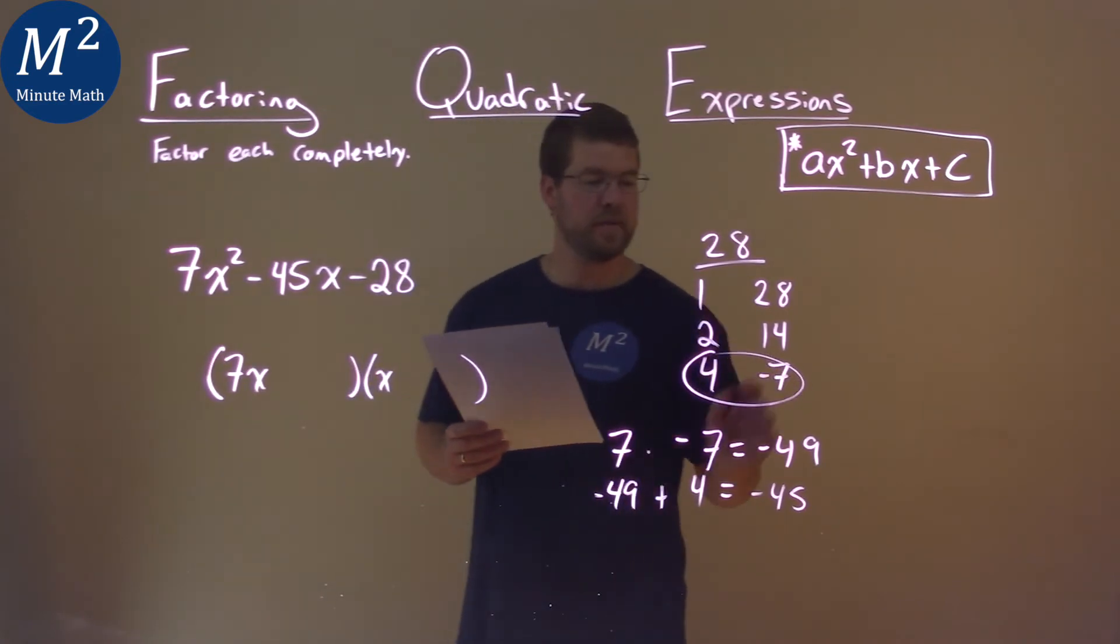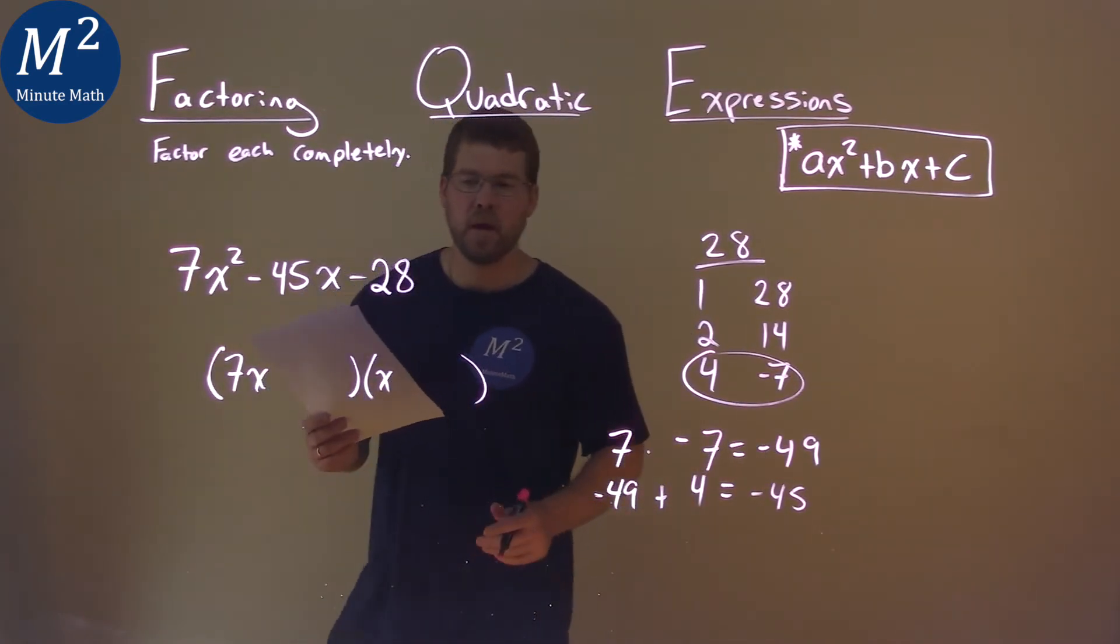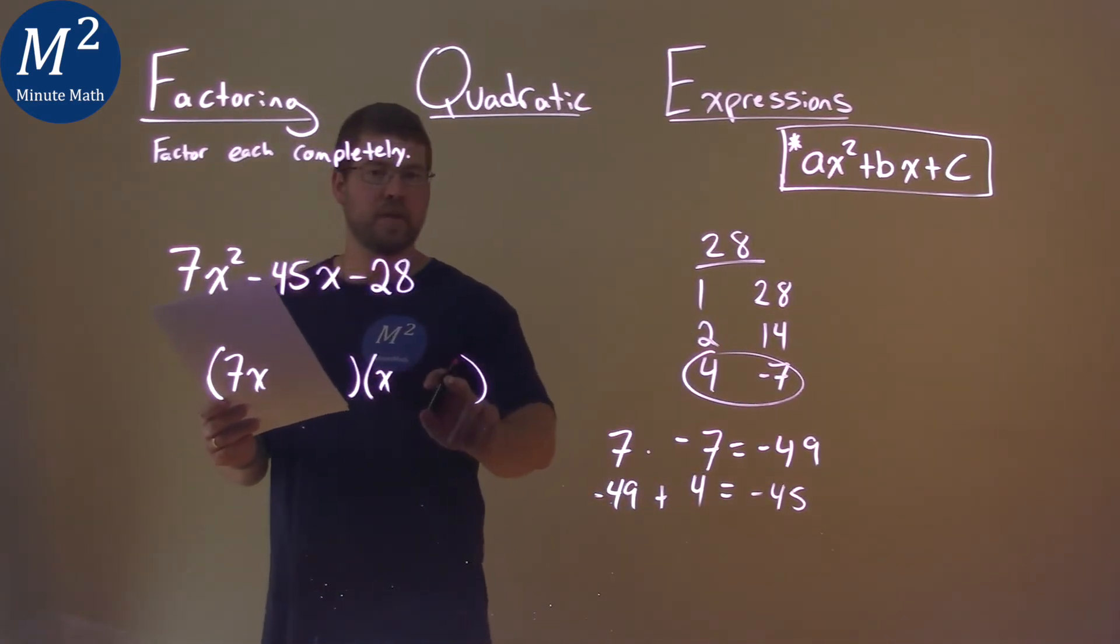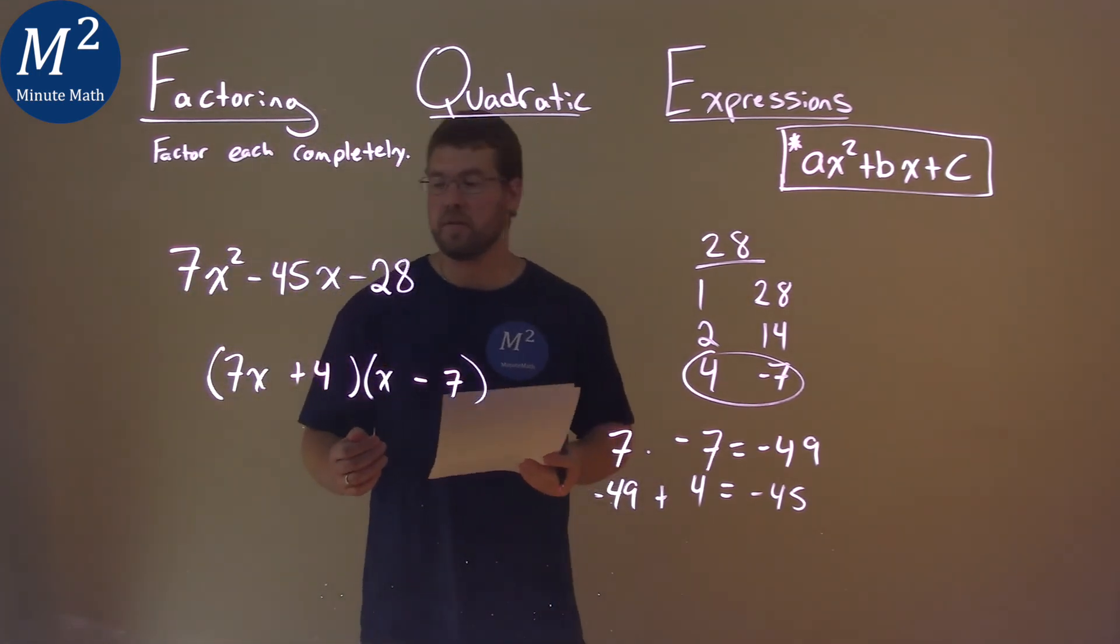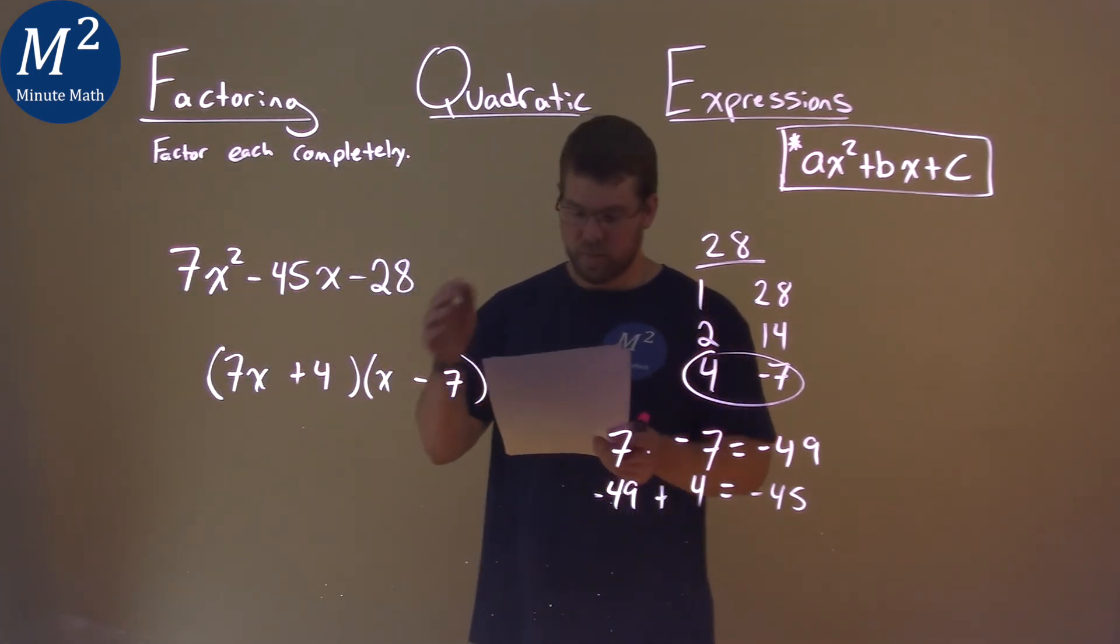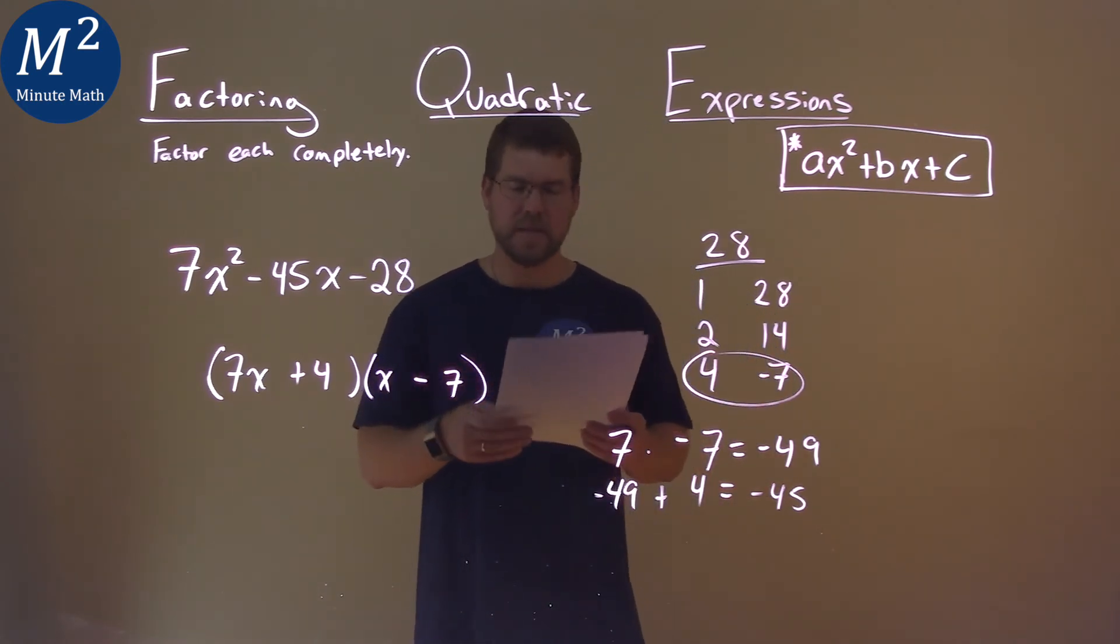So the pair here has a negative on that 7, and we want to make sure it's on this side where this 7 would multiply by this one. So we put a -7 here, we put a positive 4 here, and now we've actually factored this. Our final answer is (7x + 4)(x - 7).